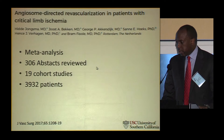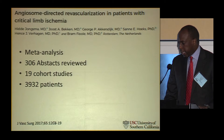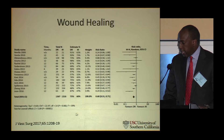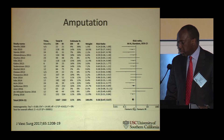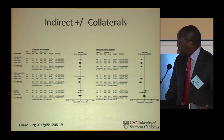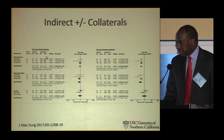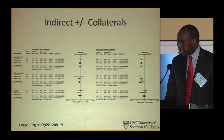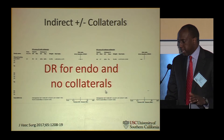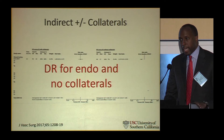A meta-analysis just published in the Journal of Vascular Surgery reviewed 19 studies. For wound healing and amputation it slightly favored direct revascularization. Survival showed no real difference. Importantly, if collaterals were present, it didn't make a difference; if there were no collaterals, it did seem to make a difference for amputations. They concluded that direct revascularization is more recommended for endovascular procedures and when patients do not have a collateral network.